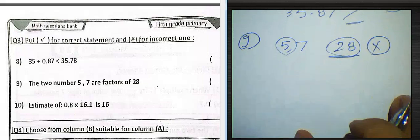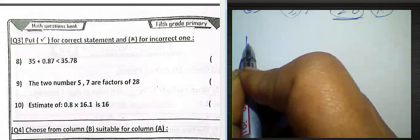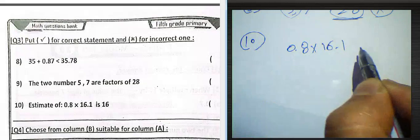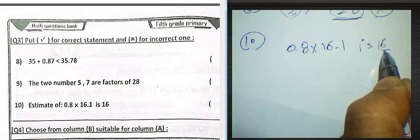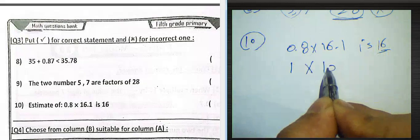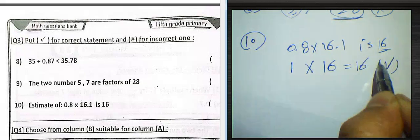Question number ten: estimate of 0.8 by 16.1 is 16. 2 or 4.3.5 to 28 plus 16, so it will be true.